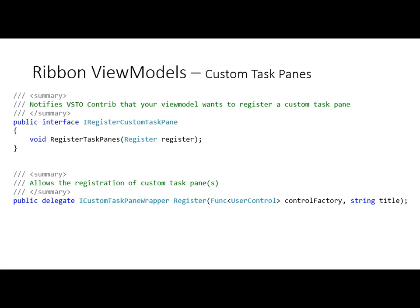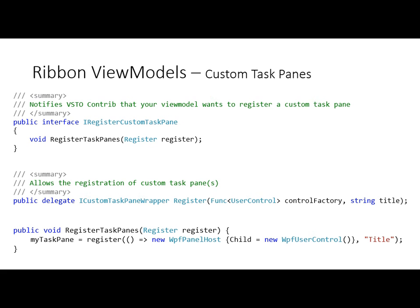The parameters of the delegate are a control factory. Because we need to register our custom task pane with multiple windows, we need to create multiple instances of your user control — this is why you have to pass a factory to us, or a Func of user control. Next we just have to pass the title. What that looks like is, in the callback, we invoke the register delegate, we pass it a user control. In this example I'm using the WPF panel host — it's a user control built into VSTO Contrib that allows you to host WPF controls in your custom task pane really easily. It works around a few little issues. And then finally the title. We can save the custom task pane as a field and interact with it whenever we want.